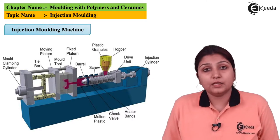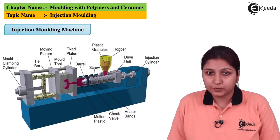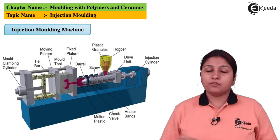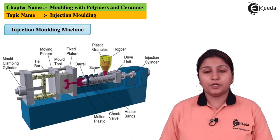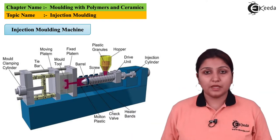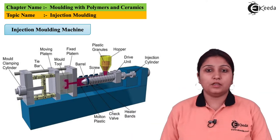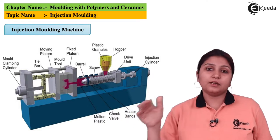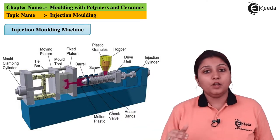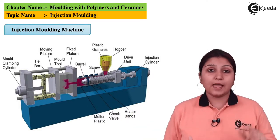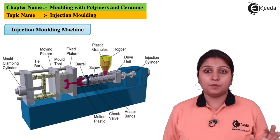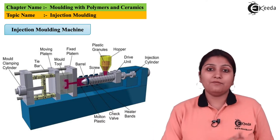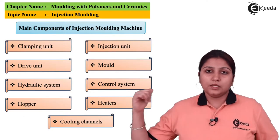From the die cavity the material comes out having been given a proper shape. In this diagram you can see there is an injection-type structure, above that there is a hopper, and the whole arrangement of injection molding is present — a basic unit, an injection unit, etc. Material is transferred to the die cavity where the exact shape is to be formed.